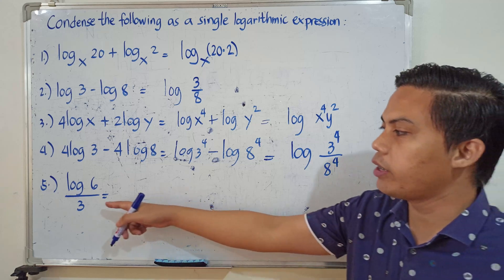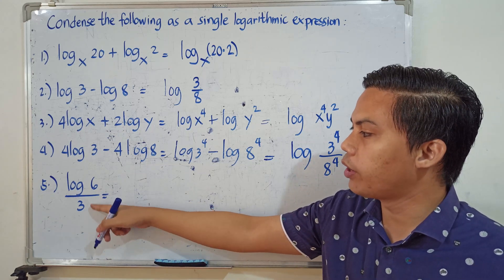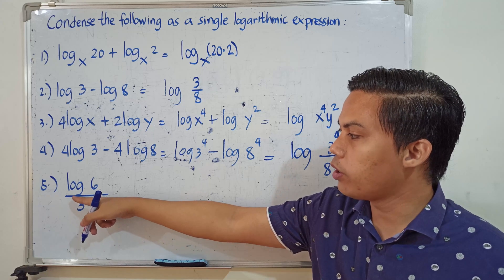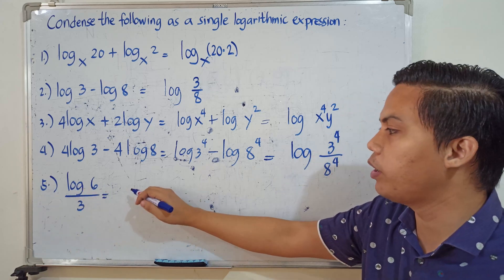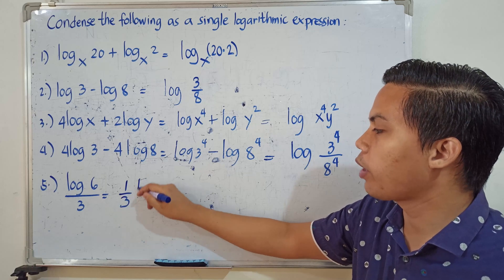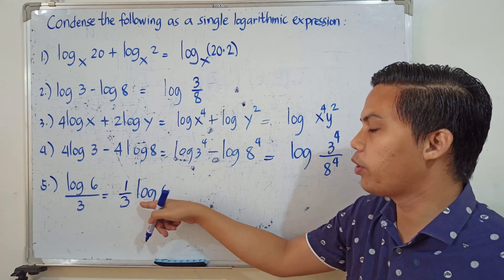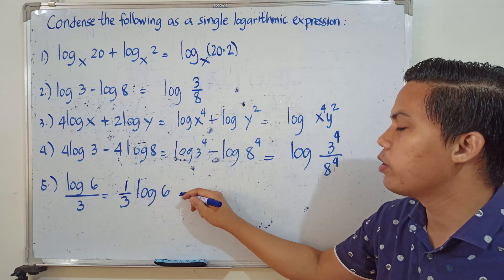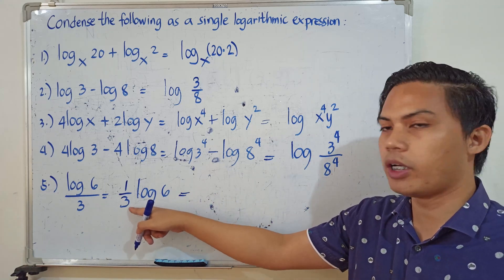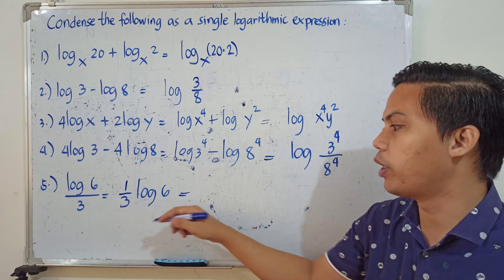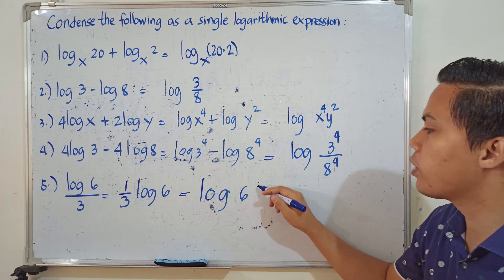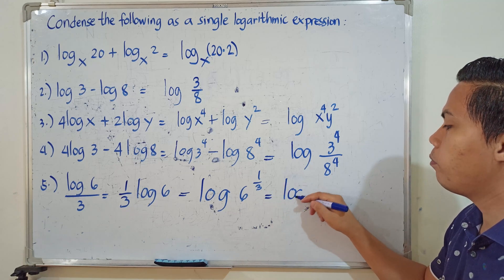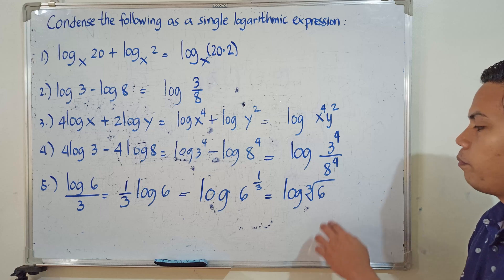Number 5 is a bit tricky. We cannot directly apply the quotient rule because there is no logarithm in the denominator. However, the logarithm of 6 over 3 can be written as one-third times the logarithm of 6. Since one-third is a numerical coefficient, it becomes the exponent. So the final answer is the logarithm of 6 raised to one-third, or equivalently, the logarithm of the cube root of 6.